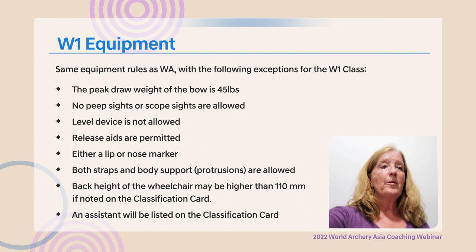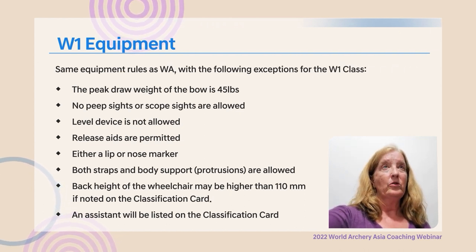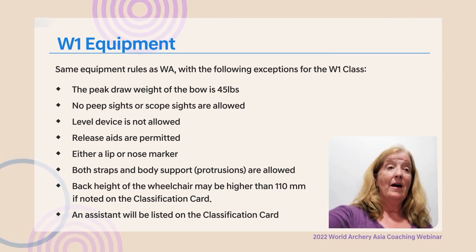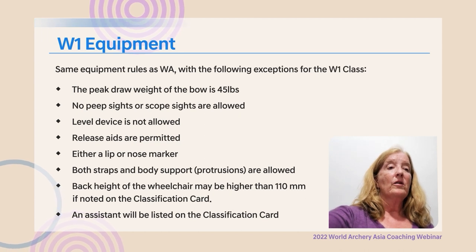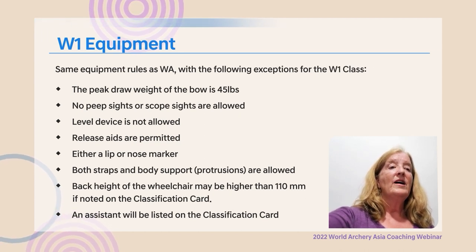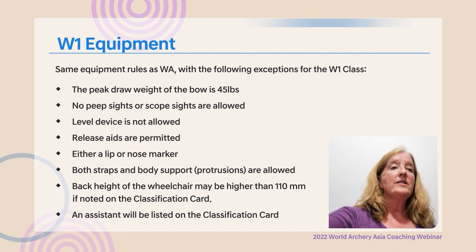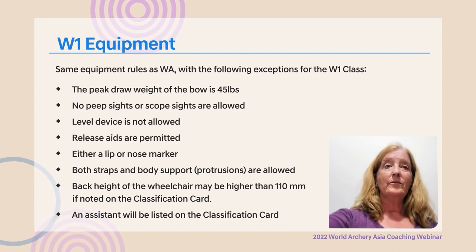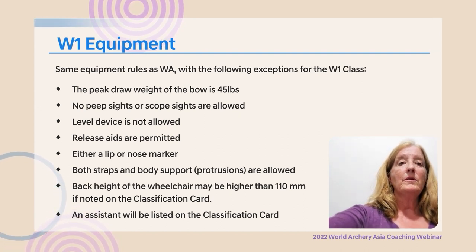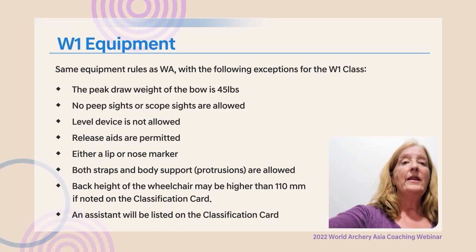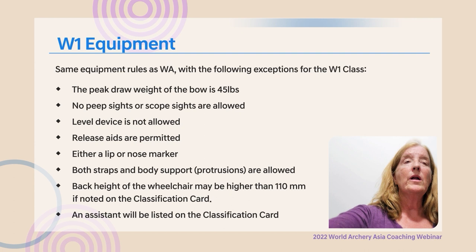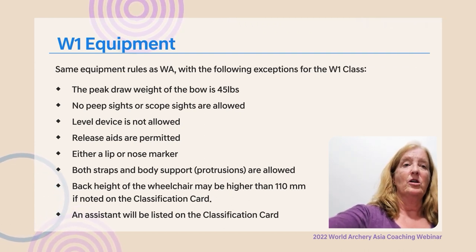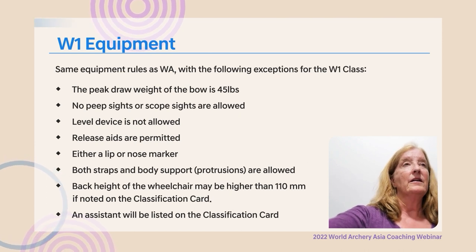There is an assistive device document user guide on the World Archery extranet under para archery, with pictures, for judges, classifiers, coaches, and athletes to understand the reasoning and interpretation of assistive device rules. W1 class has specific equipment rules as exceptions to standard World Archery rules: peak draw weight is 45 pounds; no peep sights or scope sights; no level device; release aids are permitted if on the classification card; either a lip or nose marker is allowed; strapping and body support are allowed; and the back height of the wheelchair may be less than 110 millimeters if noted in the classification card comments.